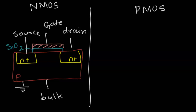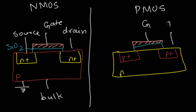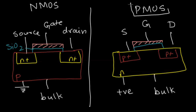The PMOS structure is the opposite of an NMOS. It starts with an N-type substrate, doped with P-plus doping at two regions. Both p-type dopings are connected with a silicon dioxide layer, topped with a polysilicon layer forming the gate terminal. The terminals are again: gate, drain, source, and bulk. In a PMOS, the bulk is connected to a positive terminal.